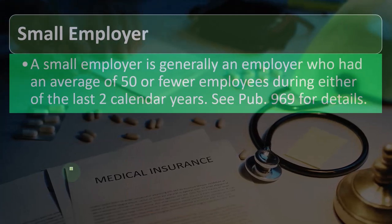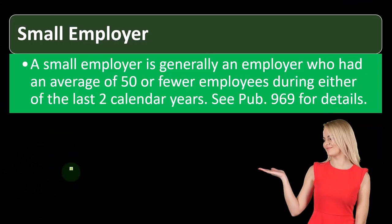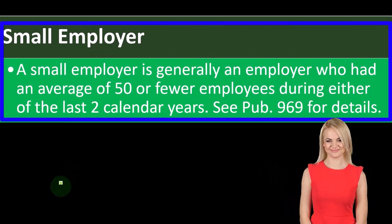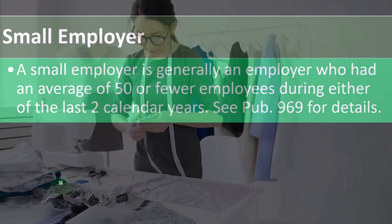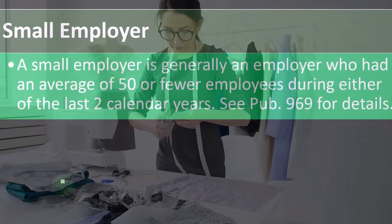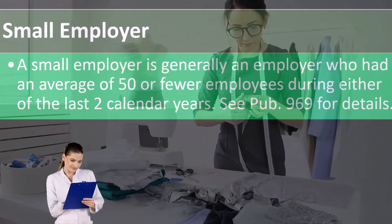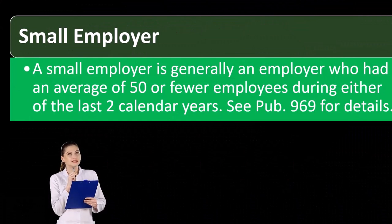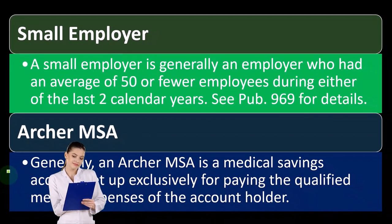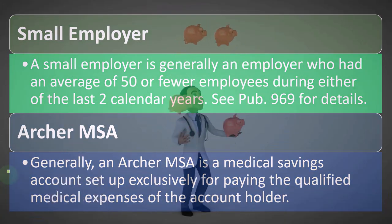A small employer is generally an employer who had an average of 50 or fewer employees during either of the last two calendar years. It gets messy when you categorize companies as large or small, because you end up with an arbitrary cutoff — they've picked 50 employees. Does hiring that 50th or 51st employee make you large? It's kind of arbitrary, but that's what happens when we put these rules in place. Generally, an Archer MSA is a medical savings account set up exclusively for paying qualified medical expenses of the account holder.